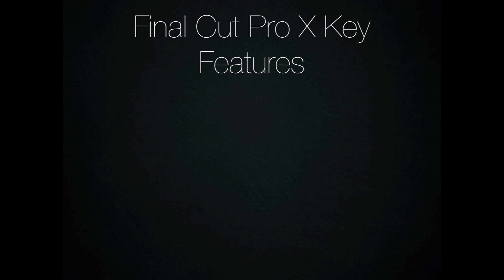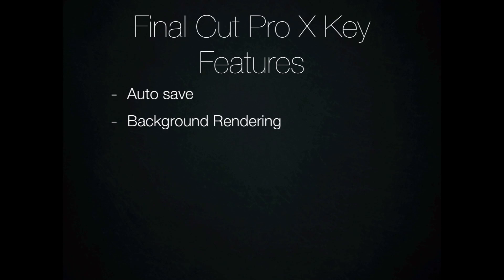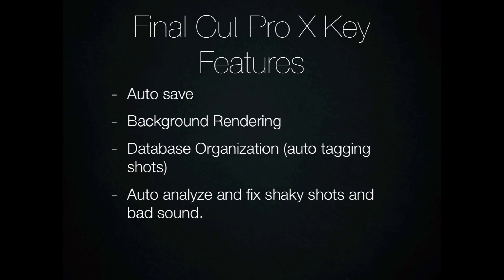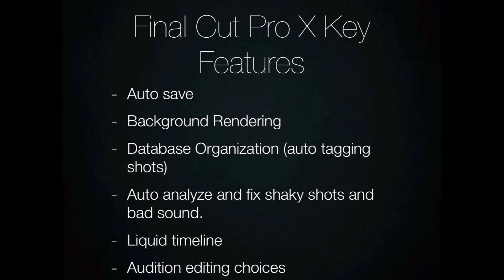Let's talk about the key features for each of these. One of the top key features of Final Cut Pro 10 is autosave — it's automatically saving every single edit and cut you make, so you don't have to save your project manually. Next up is background rendering, whereas before in Final Cut Pro 6 and 7 you had to watch that render bar. Now rendering happens in the background. There's also database organization including auto shots, the ability to analyze and fix shaky shots, a unique liquid timeline, and the ability to audition different editing choices.